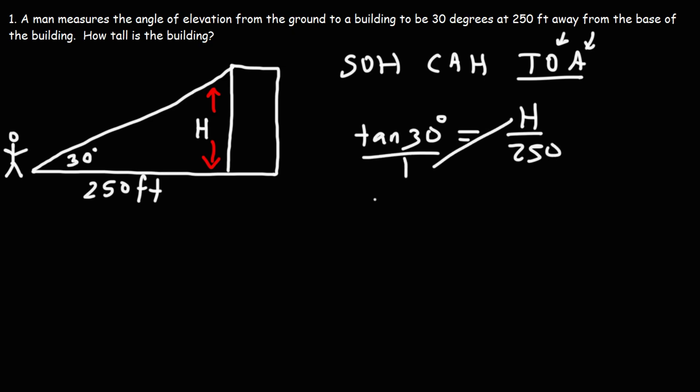If we cross-multiply, we get that H is equal to 250 times tan 30. And that is 144.3 feet. So that's how tall the building is.